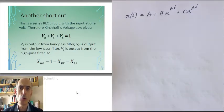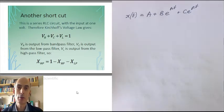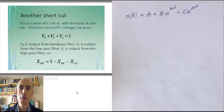And this time the shortcut works like this. We already know what the voltage is across the capacitor. That's just the step response of the low-pass filter. And we know what the voltage across the resistor is. That's the step response of the bandpass filter. We know that the sum of the voltages across the resistor, the capacitor and the inductor must be 1, because Kirchhoff's voltage law tells us that. Therefore, the voltage across the inductor, which is the output of a high-pass filter circuit, must be 1 minus the step response of the bandpass filter, minus the step response of the low-pass filter.